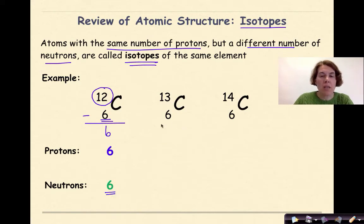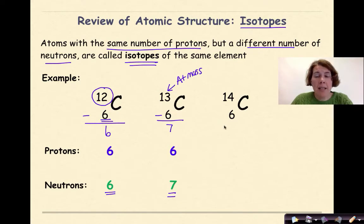Let's look at the next isotope. Again, I'm dealing with carbon, so my number of protons must be 6. This is my atomic mass up here, which represents my number of protons and neutrons. So if I take the difference between those two, I'm going to get 7. So 7 neutrons in this particular isotope. So now for my last example.